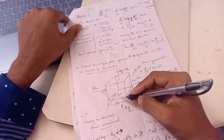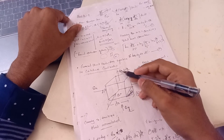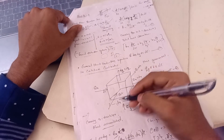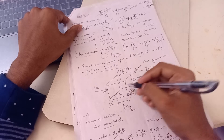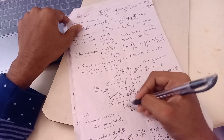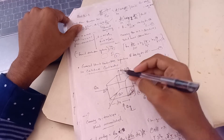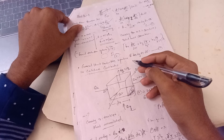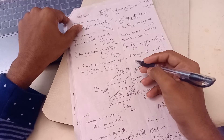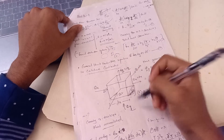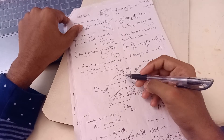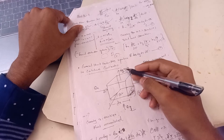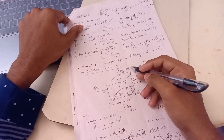In the y-direction, heat entering is qy and heat leaving is qy plus dy. In the z-direction, heat entering is qz and heat leaving is qz plus dz.